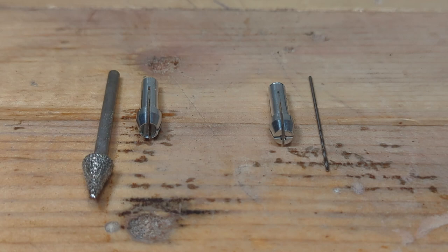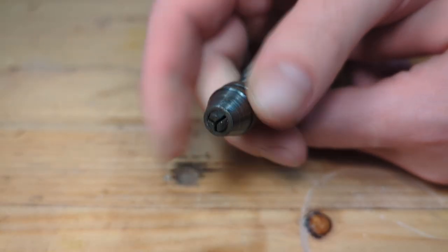And that is basically all you need to know about collets. We need to change the collet according to the shank size of the bit, or else it will just slip out of the tool or it won't fit.